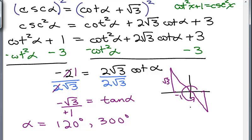They should be 180 degrees apart because the tangent has a period of 180 degrees. But now we have to make sure we check each of these solutions in the original equation — before you squared it — because you might have an extraneous root. So let's do that next.